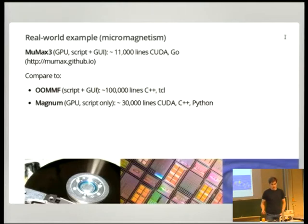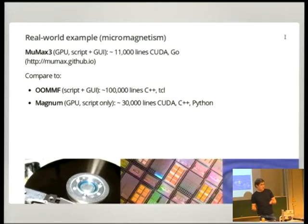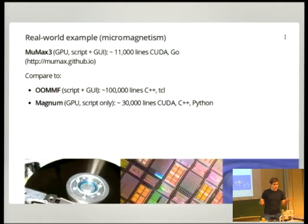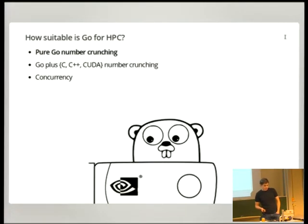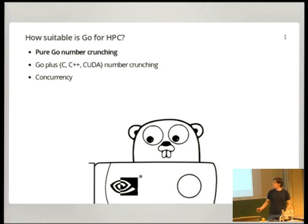It's been a really good choice in terms of productivity, but that doesn't necessarily mean Go is a completely smooth ride for computational work. I'll show this in three scenarios: pure Go number crunching, calling some external library like C, C++, or CUDA, and finally what happens when you need concurrency in your program.